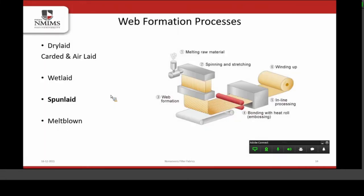The next type of web formation is spun laid. The raw material used in spun laid is different from dry laid and wet laid — it is fiber-forming polymers. These fiber-forming polymers are extruded in the form of filaments and collected on the surface of a conveyor belt in the form of a web. These webs are called spun laid webs. They may be hot calendared to increase bonding tendency, or they can be directly used as nonwoven fabrics.